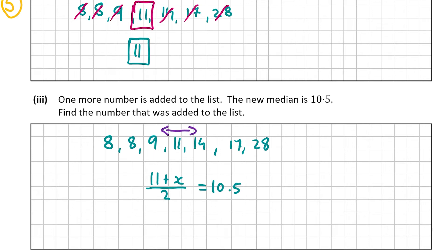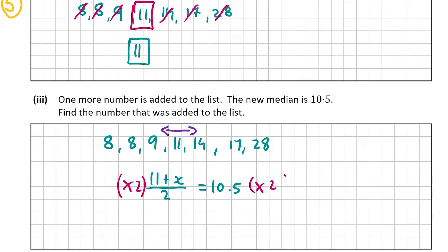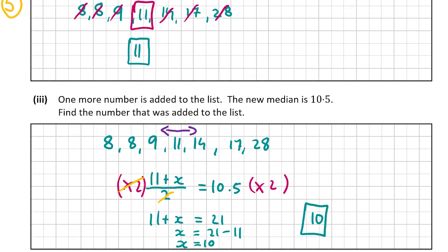So we solve for x. If x is between 9 and 14, then (x + 11) / 2 = 10.5. To solve for x, multiply both sides by 2: 11 + x = 21. Then take away 11 from both sides: x = 10. Since 10 is between 9 and 14, the new number that has been added is 10, as 10 is now one of the middle numbers along with 11. That's the answer for part 3, which was worth 5 marks.